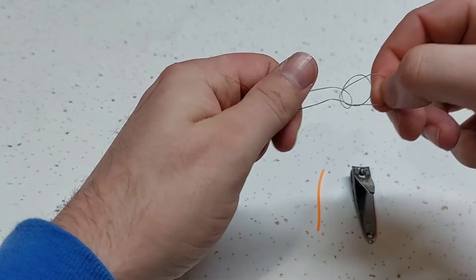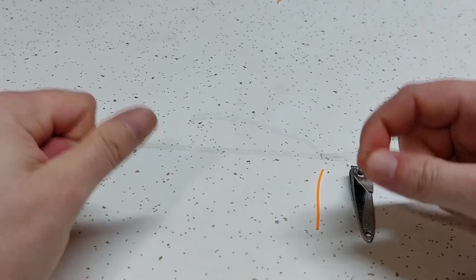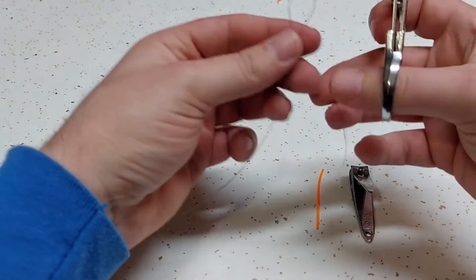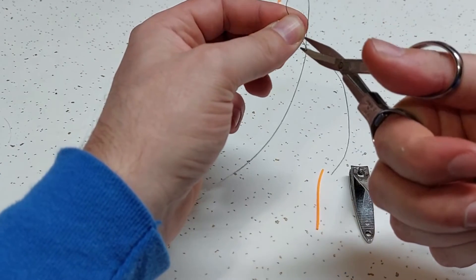And then you're just going to pull it back through the same way that you did the other one. Cut your tag off. There you go.